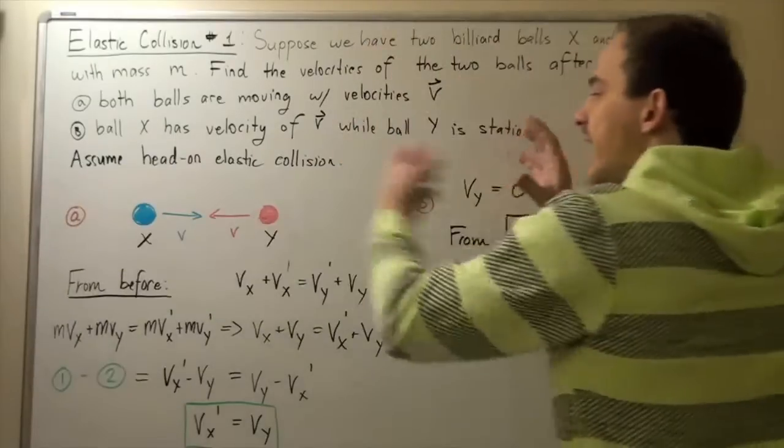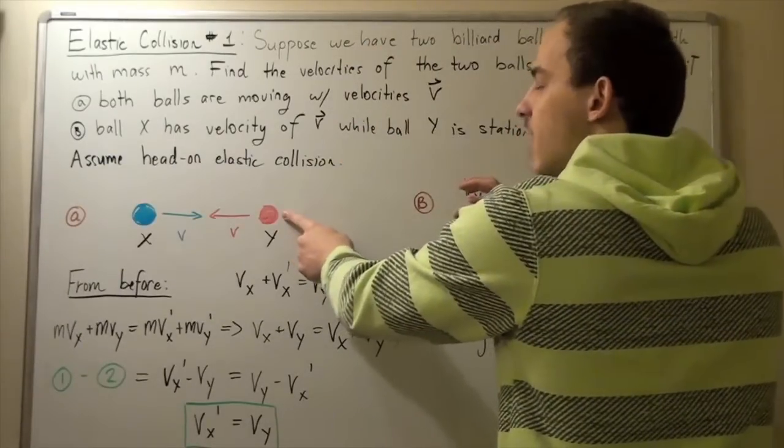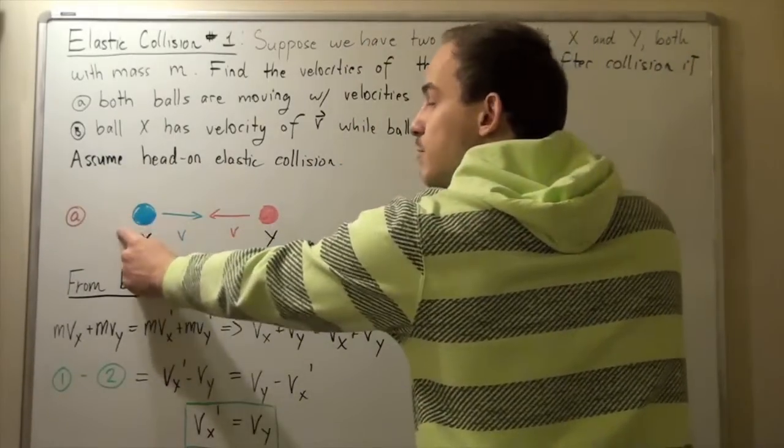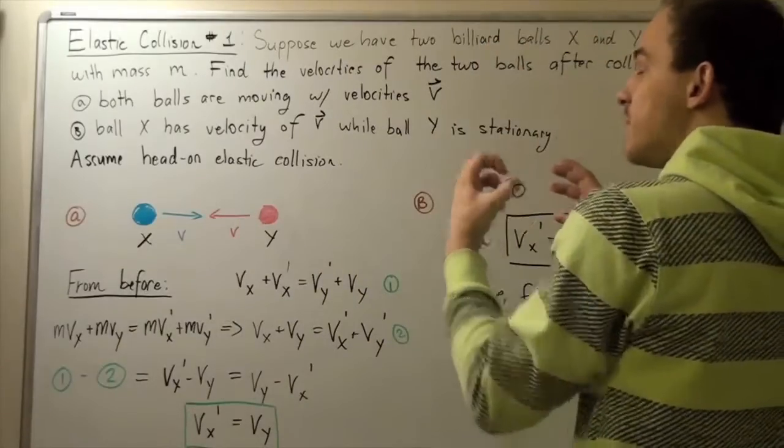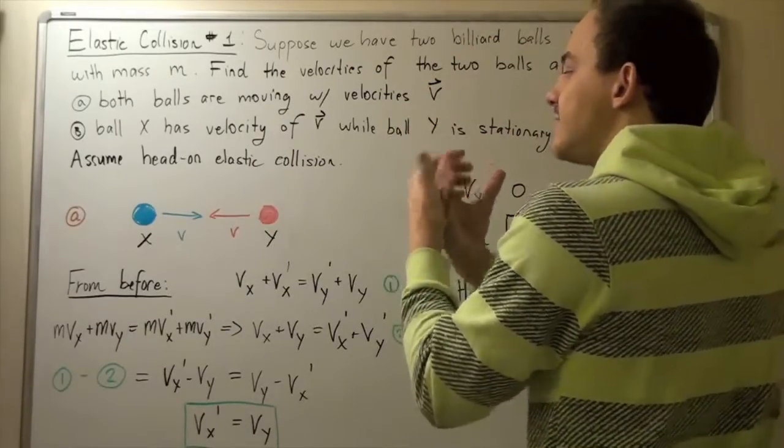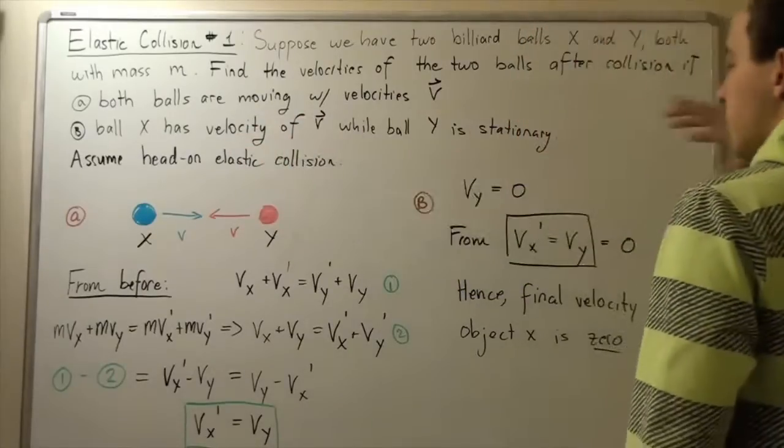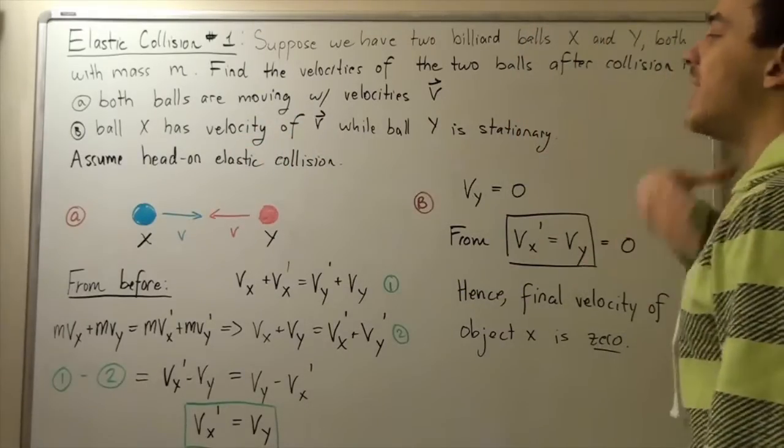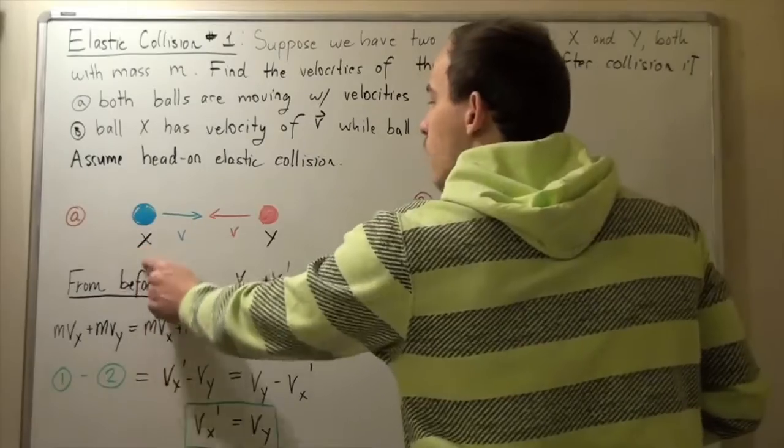As soon as the ball hits this red ball, the X ball (the blue ball) will stop. It will remain stationary. They will exchange velocities and this ball will now begin traveling in this direction with the initial velocity of ball X.